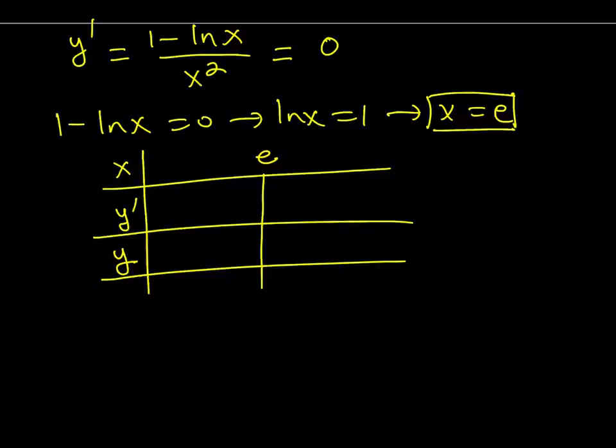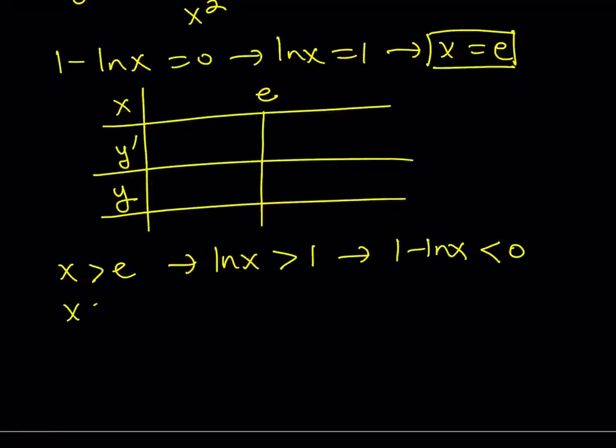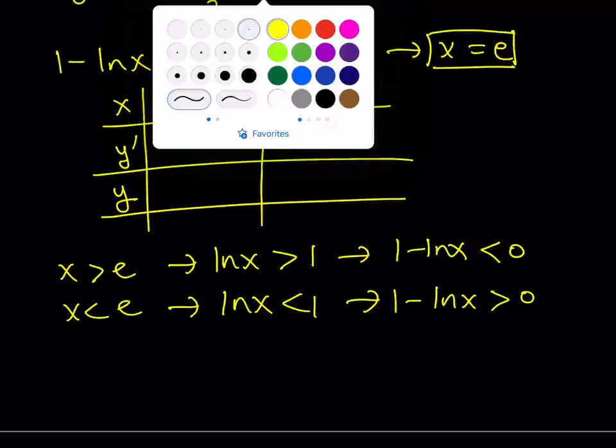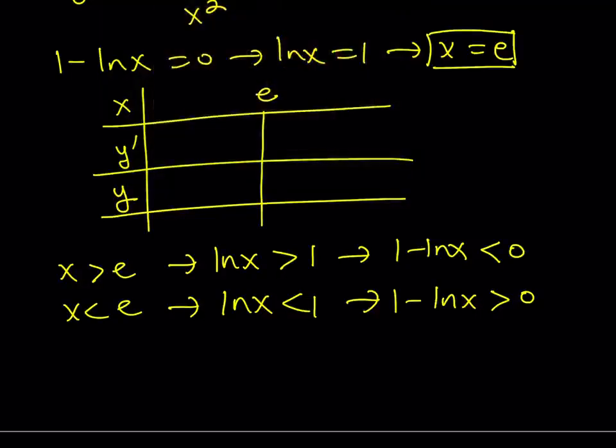Let's go ahead and take a look at the following. If my x values are greater than e, this is going to indicate that ln x is going to be greater than 1. And therefore, 1 minus ln x, which is the derivative, is going to be negative. For larger values, values of x that are larger than e, the derivative is going to be negative. Otherwise, if x is less than e, ln x is going to be less than 1. And if you subtract something less than 1 from 1, you're supposed to get a positive quantity. Therefore, we can put the following signs on the table. If x is greater than e, the derivative is negative. Otherwise, it's positive. And of course, at e, the derivative is 0.